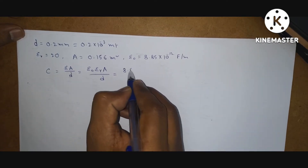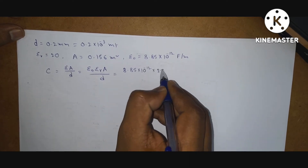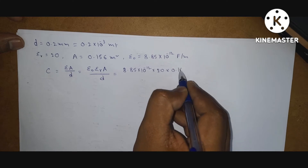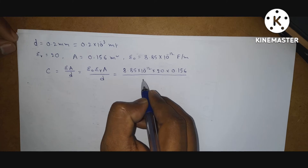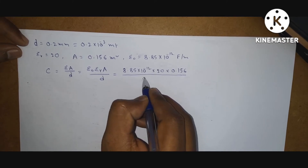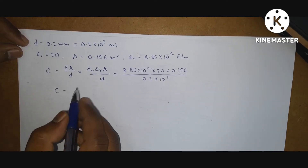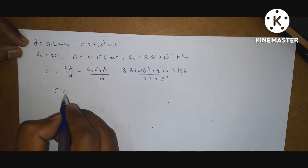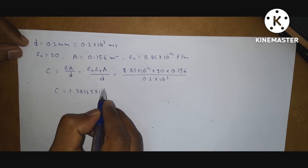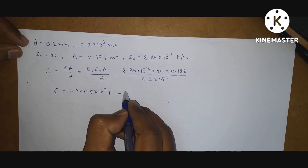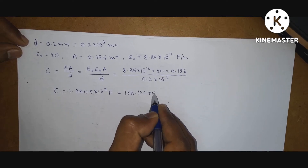Now substitute these values: 8.85 into 10 power minus 12, into 20, into area 0.156, divided by distance 0.2 into 10 power minus 3. So if you solve this, you will get capacitance value: 0.38125 into 10 power minus 7 Farad, or you can write it as 38.125 nanofarads.